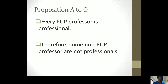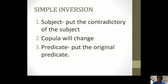Proposition A to O. 'Every PUP professor is professional.' The subject term is 'every PUP professor.' You're just going to change your subject into its reciprocal. Therefore, 'some non-PUP professor' — O meaning it is particular — 'are not professionals.' You change your subject into its reciprocal and make your copula negative, because your copula will change.